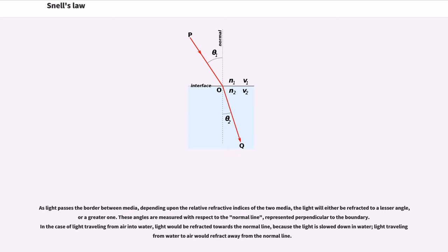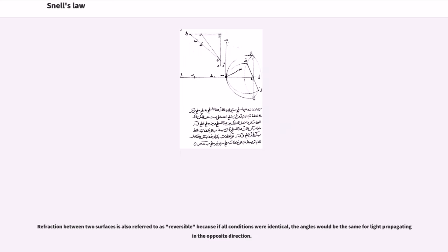As light passes the border between media, depending upon the relative refractive indices of the two media, the light will either be refracted to a lesser angle or a greater one. These angles are measured with respect to the normal line, represented perpendicular to the boundary. In the case of light traveling from air into water, light would be refracted towards the normal line, because the light is slowed down in water. Light traveling from water to air would refract away from the normal line.